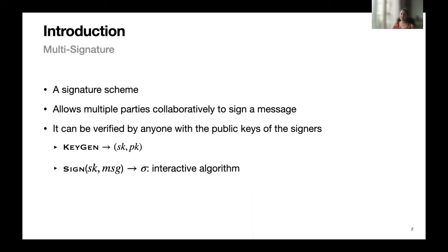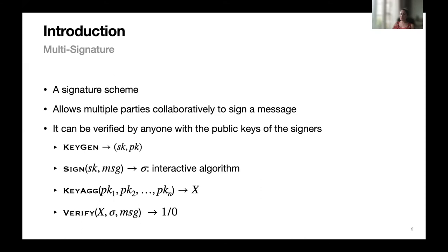The other algorithm is the signing algorithm, which runs with the input of the secret key and the message, and it is an interactive algorithm run by the signers. There is also a key aggregation algorithm, which receives the public keys of the signers as input and outputs an aggregated key. There is also a verification algorithm, which verifies the signature with the aggregated public key.